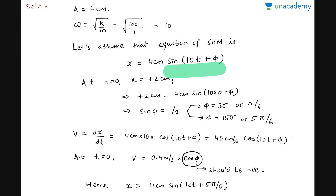The final equation will become x = 4 cm · sin(10t + 5π/6). That's your answer. If you have difficulty with this question, you can see lesson number 3 or 4 from the course — the lesson on meaning of constants. If you have seen that lesson, this question should be quite easy to solve.